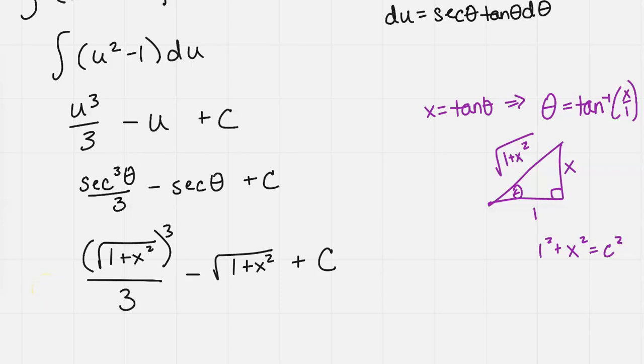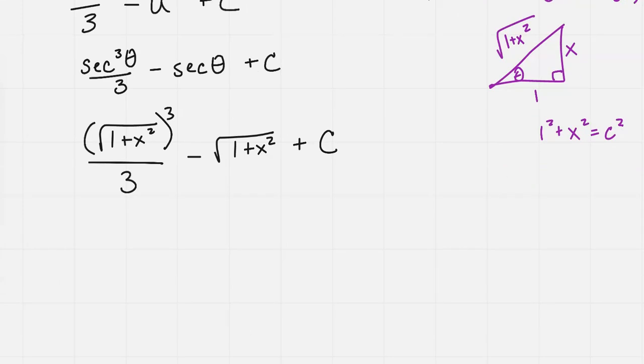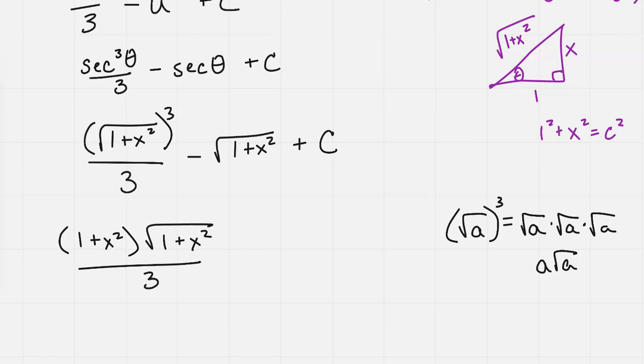But a little simplifying we can do here is to recognize that if we take the square root of anything cubed, so square root of a cubed, that equals square root of a times square root of a times square root of a, which would equal a square root of a. So we would get 1 plus x squared times the square root of 1 plus x squared all over 3.